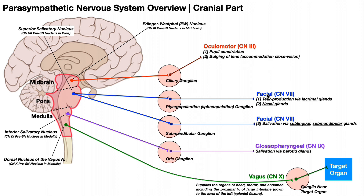The second cranial nerve with parasympathetic function is the facial nerve. Its second-order neuron cell bodies are located in the pons, clustered in the superior salivatory nucleus. One set of these neurons projects to the pterygopalatine ganglion, also called the sphenopalatine ganglion, while another set projects to the submandibular ganglion. Depending on which ganglion they send neurons to, that dictates their function.